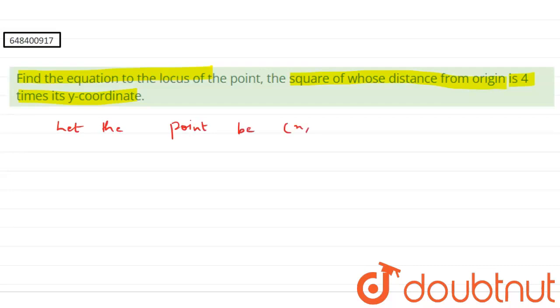And after this, I will find the distance of this point from origin using distance formula. And that will be simply x minus 0 whole square plus y minus 0 whole square, which is x square plus y square.